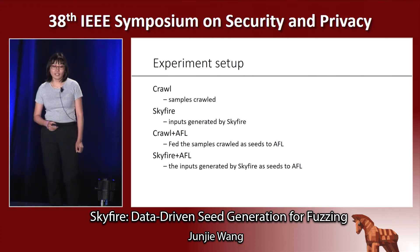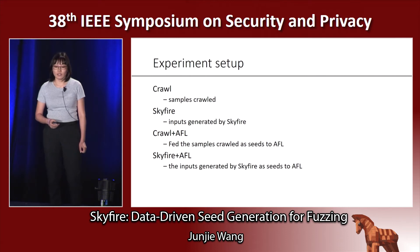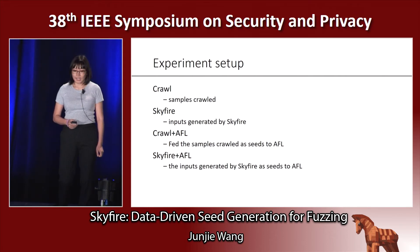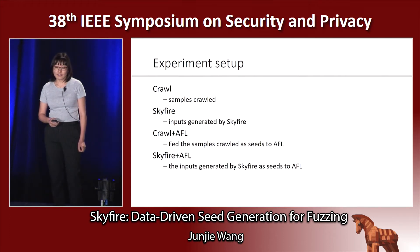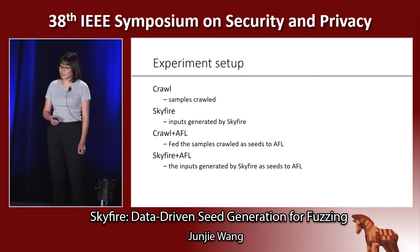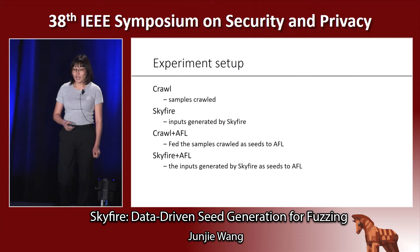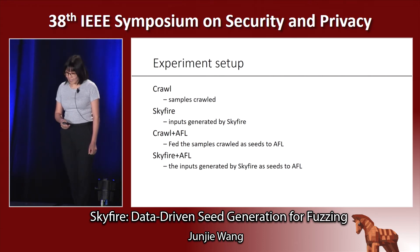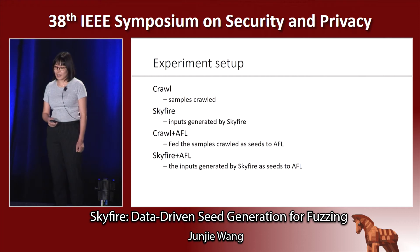We have four types of experiment setups. First, we feed the samples crawled directly to the target program. Second, we feed the samples crawled to the target program via AFL. Third, we feed the SkyFire-generated samples to the target program, and fourth, we feed the SkyFire-generated samples to the target program using AFL — denoted as SkyFire plus AFL.